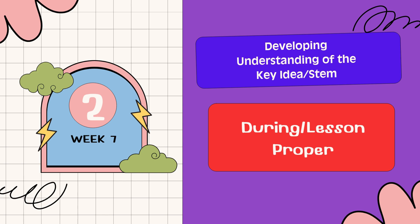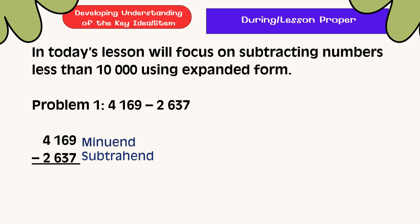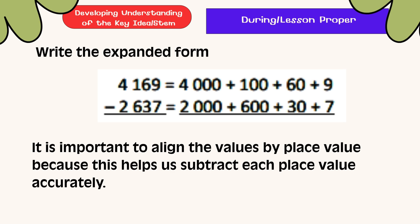Developing Understanding of the Key Ideas. In today's lesson, we'll focus on subtracting numbers less than 10,000 using expanded form. Problem 1: 4,169 minus 2,637. 4,169 is the minuend and 2,637 is the subtrahend. In expanded form, 4,169 is expanded as 4,000 plus 100 plus 60 plus 9. 2,637 is expanded as 2,000 plus 600 plus 30 plus 7. It is important to align the values by place value because this helps us subtract each place value accurately.